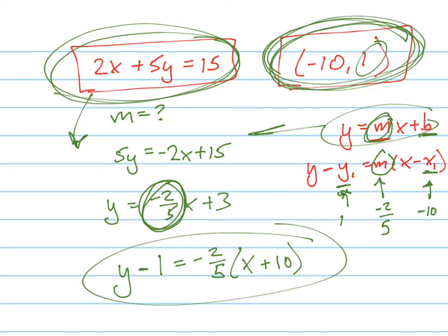Now, they didn't tell you to put it in slope-intercept form, so you don't have to do anything else. But if they told you, give me the equation in slope-intercept form, then I would have to distribute this negative 2 fifths in and move the 1 over by adding 1 to both sides and be careful to do it right.